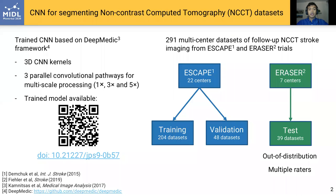To train, validate, and test the model, we used 291 multi-centered datasets of follow-up non-contrast CT stroke images from the ESCAPE and ERASER clinical trials. The ESCAPE data was used for training with 204 datasets and validation with 48 datasets. Our holdout test set came from a completely different study, the ERASER trials, which were taken from seven centers that did not contribute to the training and/or validation sets.